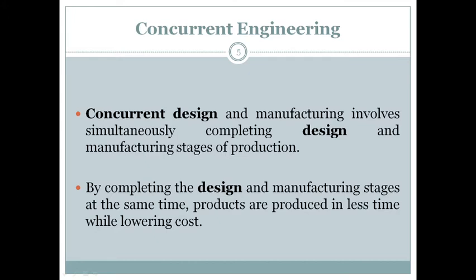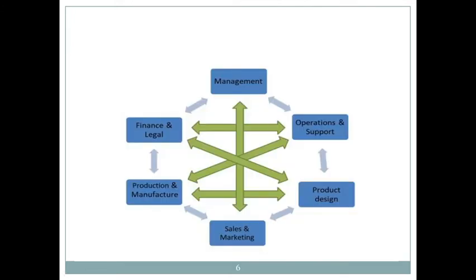Concurrent design and manufacturing involves simultaneously completing the design and manufacturing stages of production. Usually in the product life cycle there are distinct stages: design, construction, production, and manufacturing. But here, even design and manufacturing are done at almost the same time. By completing the design and manufacturing stages simultaneously, products are produced in less time at lower cost, with increased productivity.